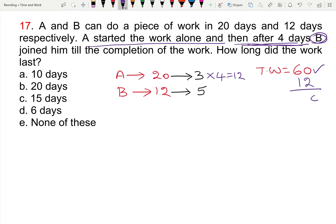48 units remain. Now A and B work together, 3 plus 5, 8 units per day. So 48 units, 8 units per day.